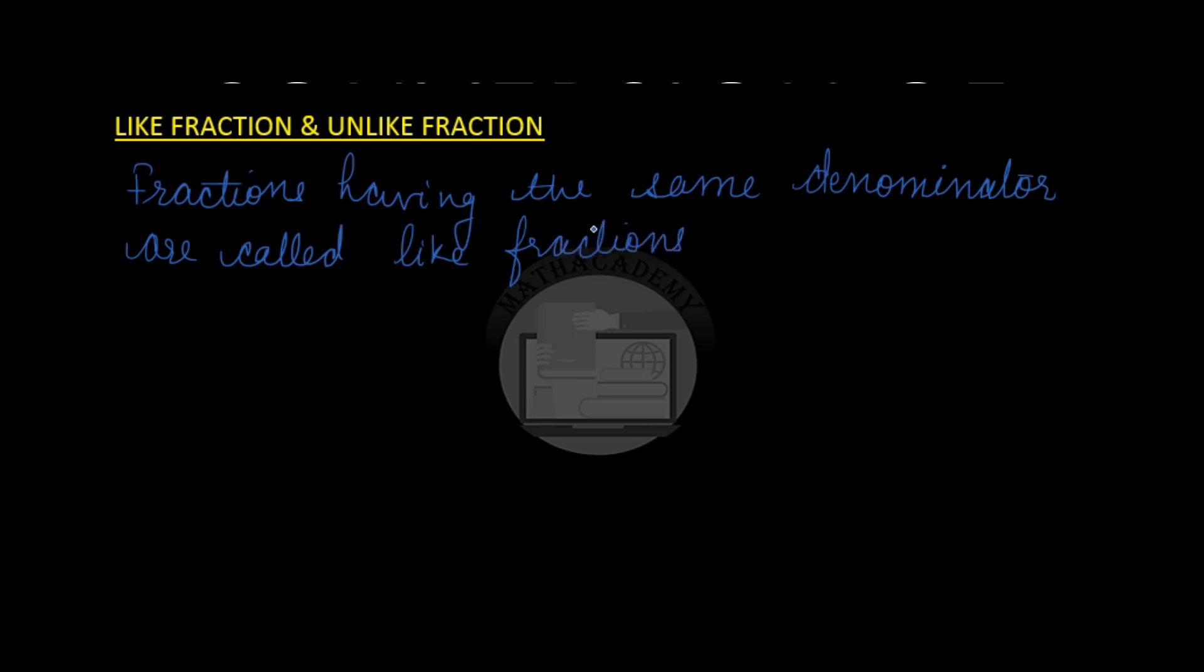Let us take some examples. Say 5 over 8, 7 over 8, 10 over 8. All these fractions have the same denominator 8 and therefore they are like fractions.